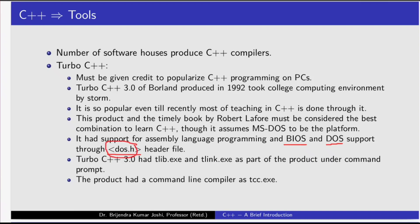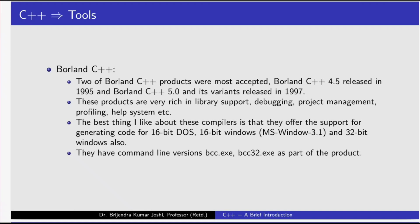Turbo C++ 3.0 had tlib.exe turbo librarian and tlink.exe turbo linker as part of the product under command prompt. The product had a command line compiler tcc.exe but unfortunately most people don't even use it. It is standard C++.